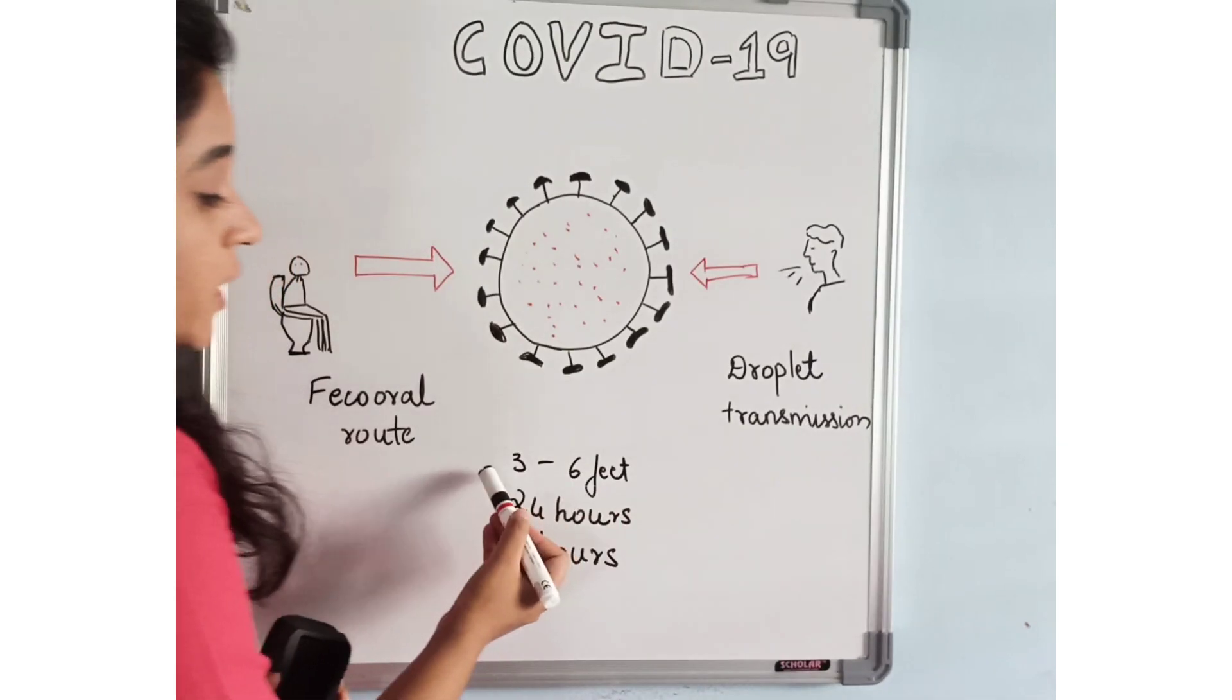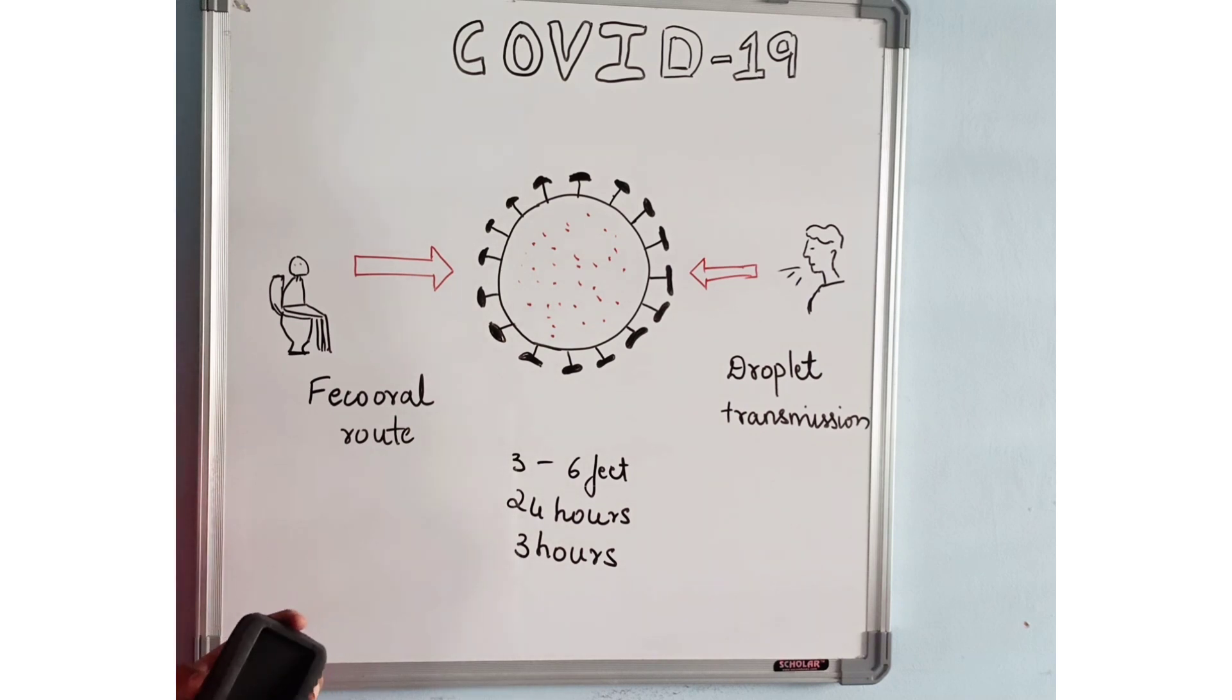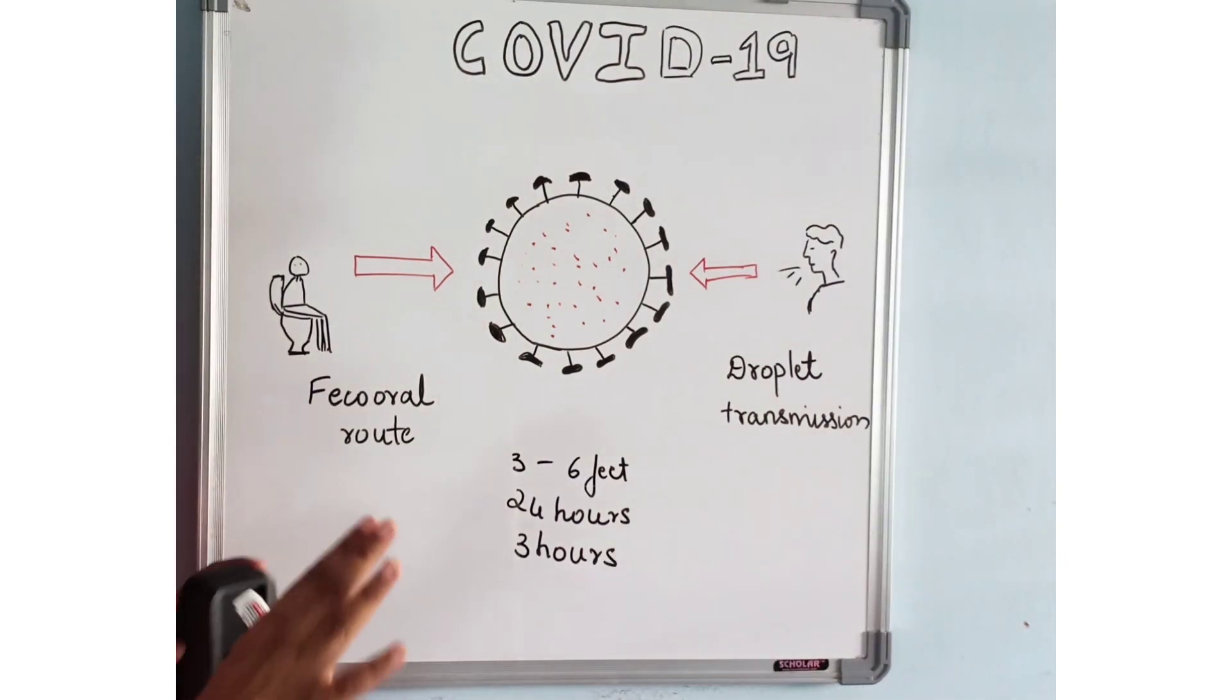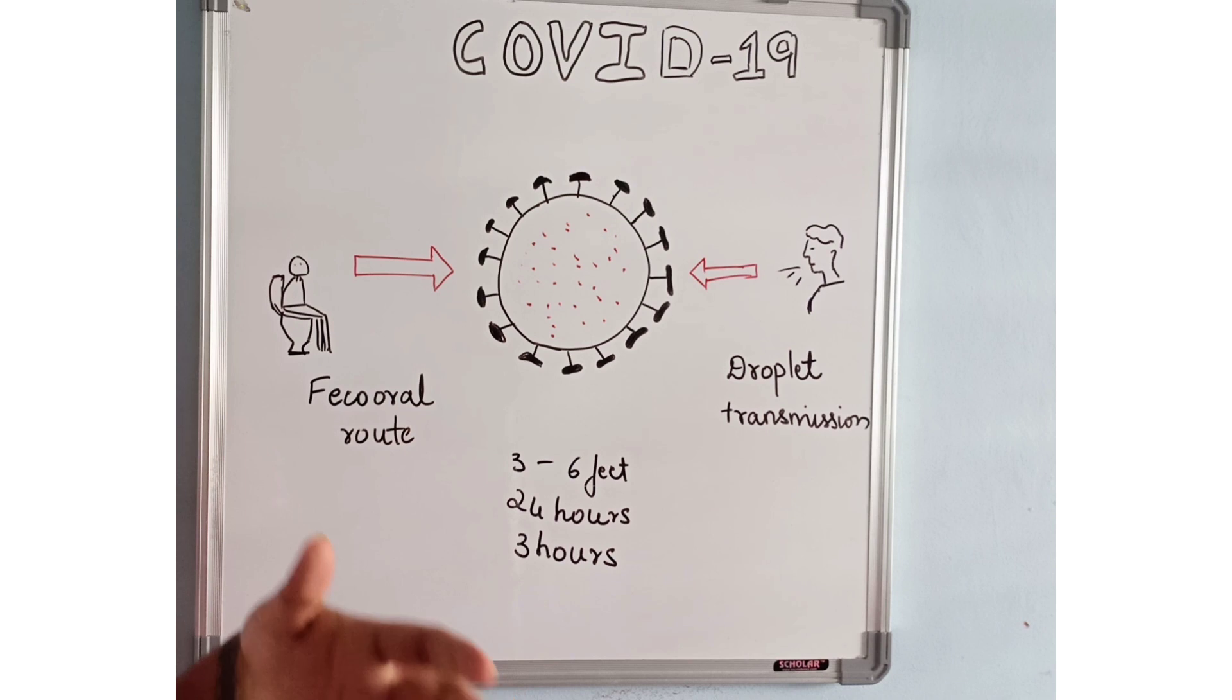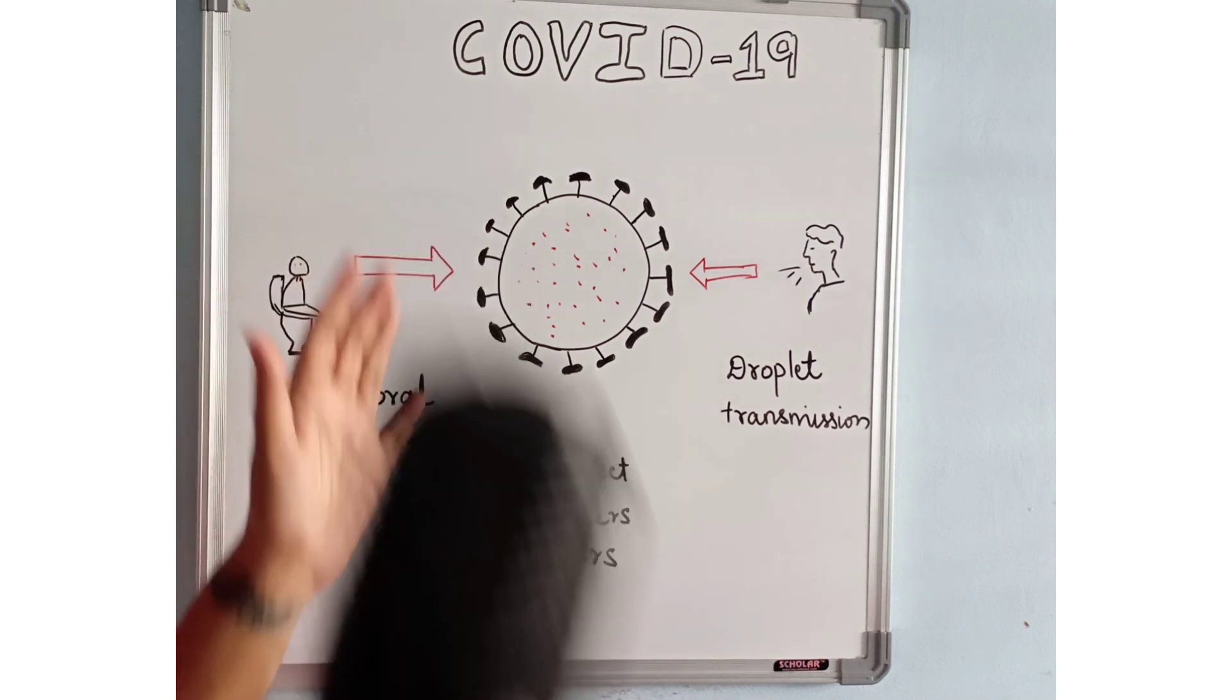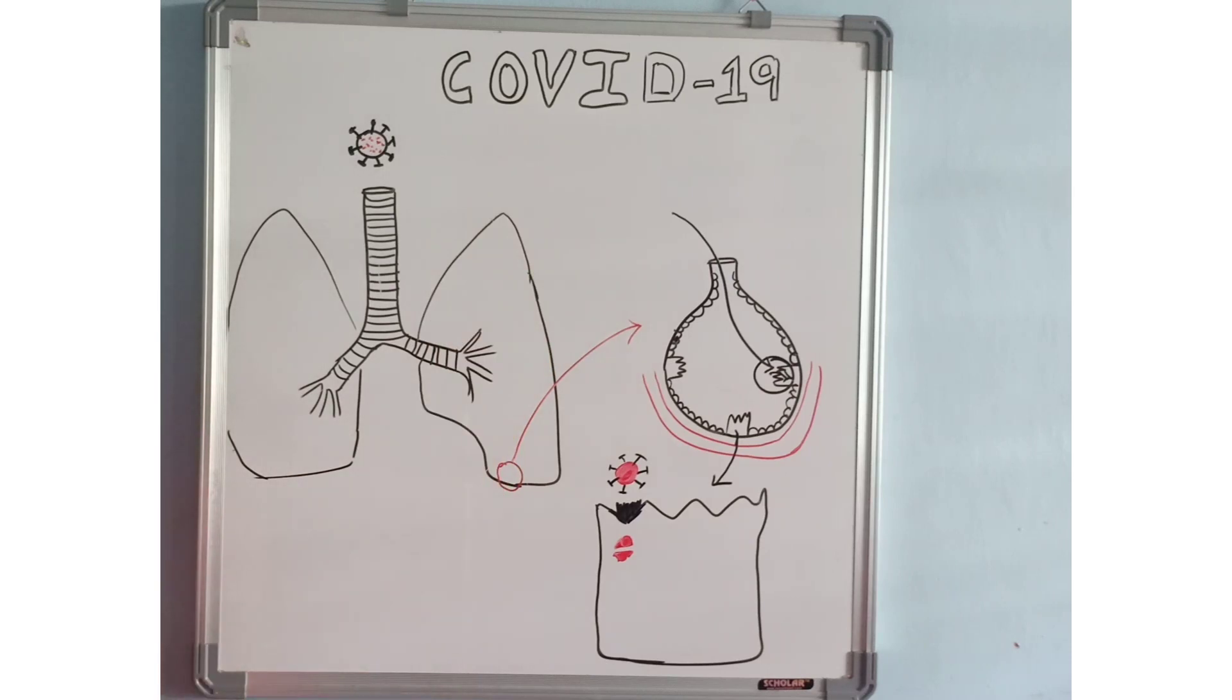That is why social distancing is the main thing that has to be followed in this situation. It is also said that it stays on the environment or any object for around 24 hours, and whenever a person sneezes, it remains in that air for around three hours.